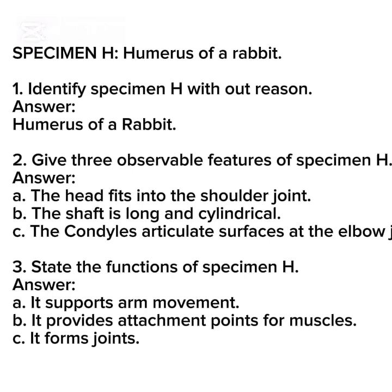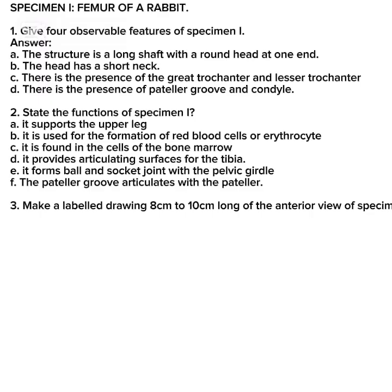Specimen H is the humerus of a rabbit. The first question: identify Specimen H without reason — answer, humerus of a rabbit. Number two: give two physical features of Specimen H — number one, the head fits into the shoulder joint; number two, the shaft is long and cylindrical; number three, the condylar articulating surface is at the elbow. Next question: state the functions of Specimen H — it supports arm movement, provides attachment points for muscles, and forms joints.